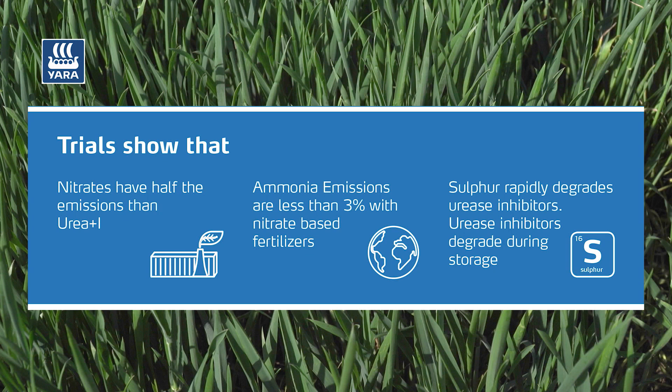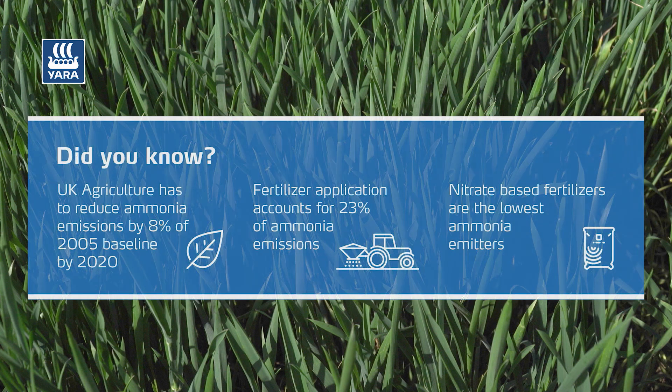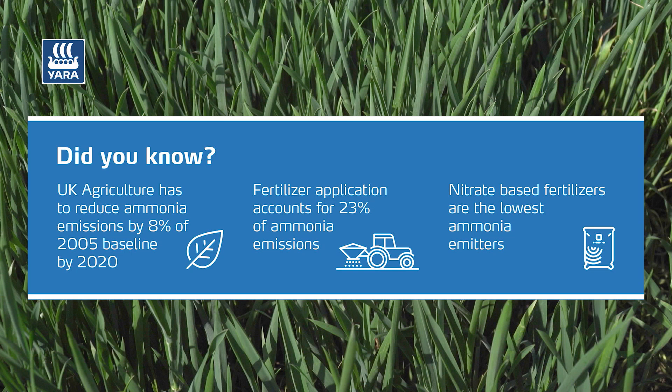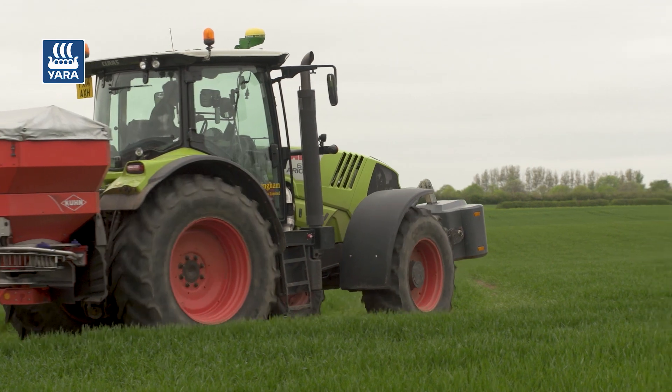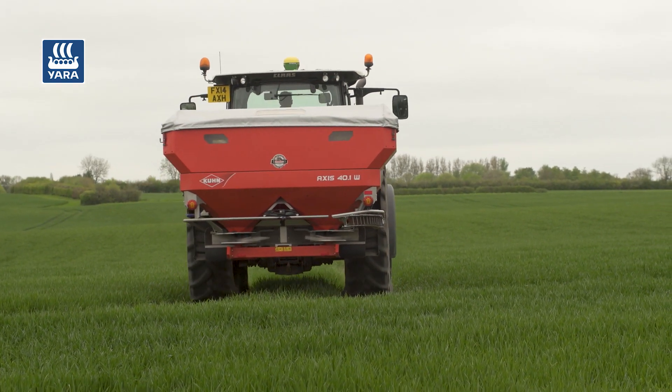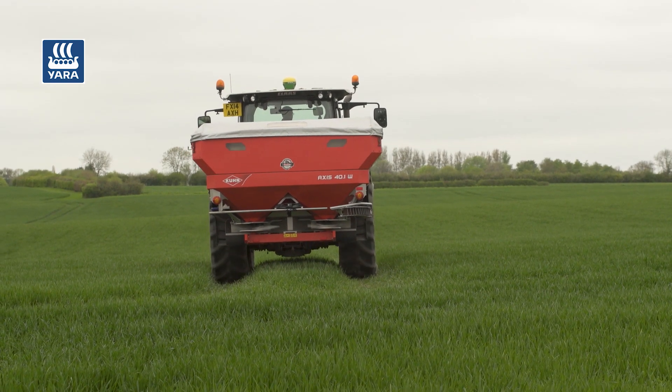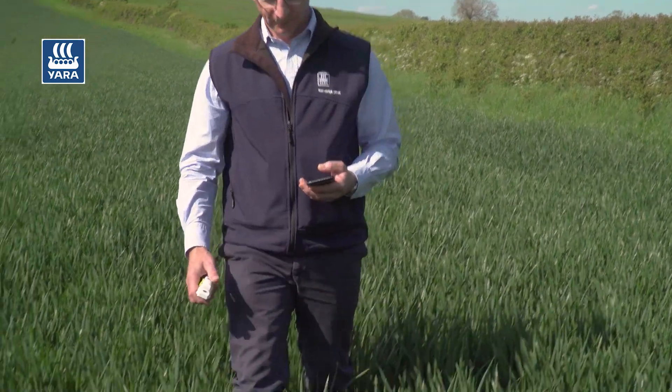Nitrogen use efficiency is a very complex calculation, but what we're focusing on today is the nitrogen fertilizer use efficiency aspect of it. The first and probably most important element is choosing a nitrogen that's in the available form, so the crop can take it up very quickly and soon after application. When comparing forms you've got choices around ammonium nitrate, urea, urea ammonium nitrate, and now urea with inhibitors. The science tells us that ammonium nitrate is the most available form of nitrogen you can apply.